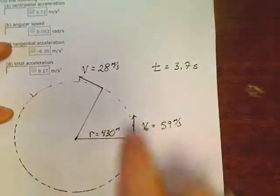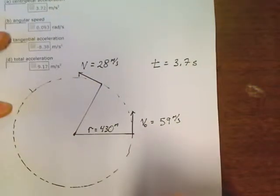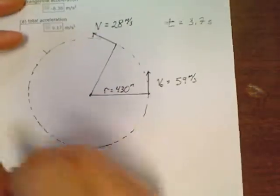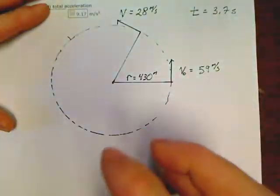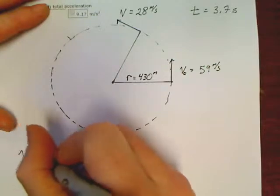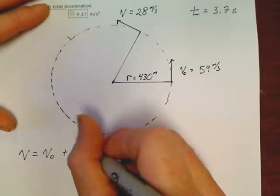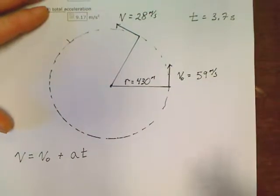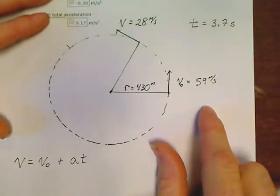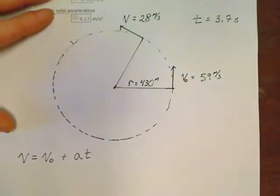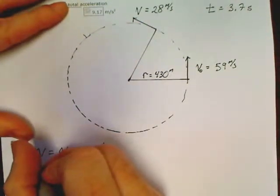We've got all this stuff. Let's go back to our normal kinematics. It's V equals V0 plus at. Look at what we can find already in this problem. We can find acceleration. We know that this is 28 equals 59 plus a times 3.7.